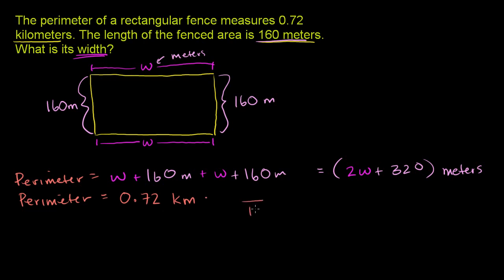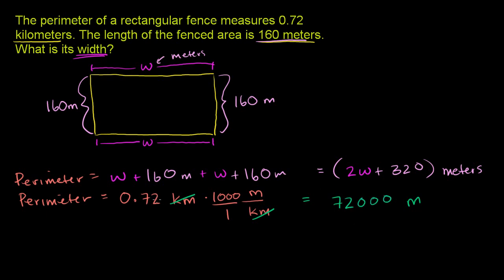So let's convert 0.72 kilometers to meters. We want the kilometers in the denominator so it cancels out with the kilometers, and meters in the numerator. Now, how many meters equal a kilometer? It's 1,000 meters for every 1 kilometer — 1 kilometer is 1,000 meters. If you multiply these two things, the kilometers cancel out and you're just left with the meters. When you multiply 0.72 times 1,000, you can first say 72 times 1,000 would be 72 with three zeros. Then, out of the two numbers you're taking the product of, we have two numbers behind the decimal, so you put two numbers behind the decimal. So 0.72 times 1,000 is 720.